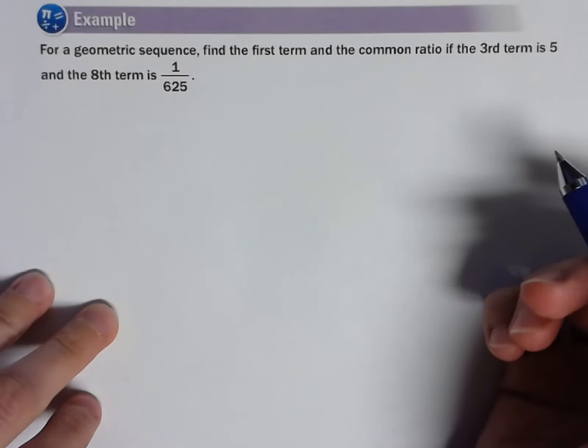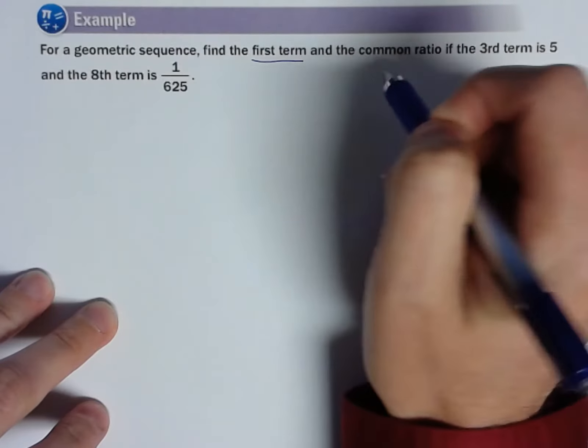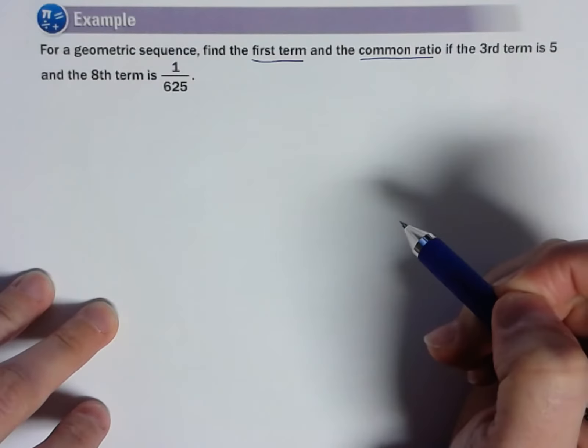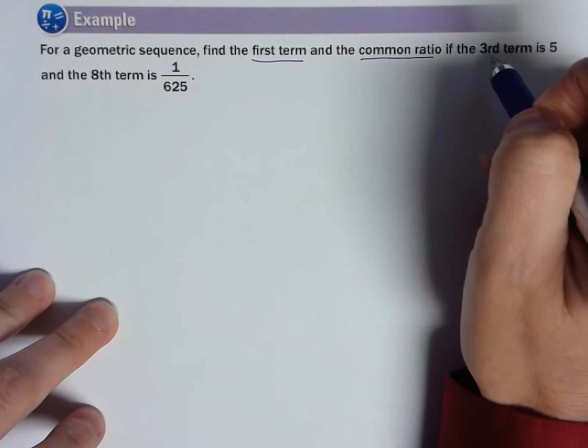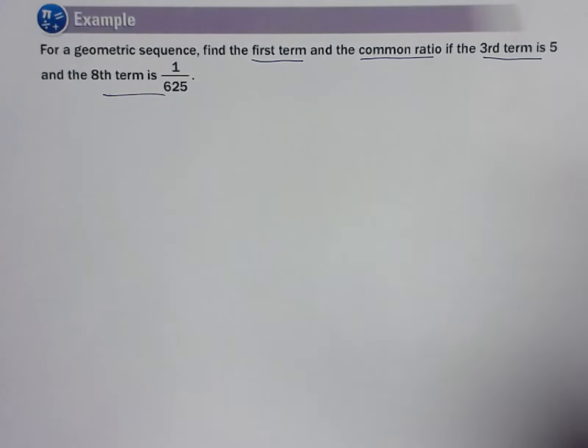Another geometric sequence example. This time, though, they want us to find the first term and the common ratio. We're given the third term and the eighth term. So very similar.